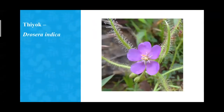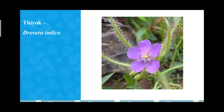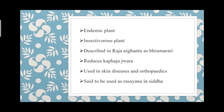The next plant is an endemic plant with a very beautiful flower seen in the wet condition of Madaipara. It is called tea oak or Drosera indica — an endemic insectivorous plant to such ecosystems. We can see reference about this plant as Brammarari in Ayurveda.